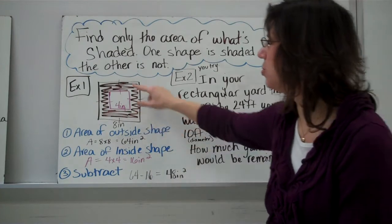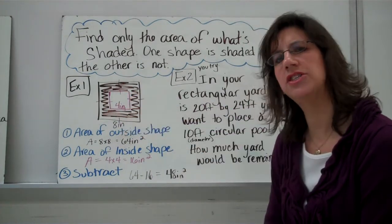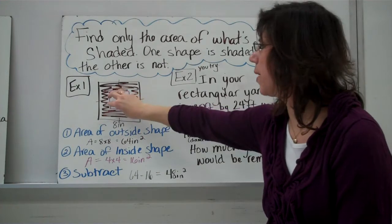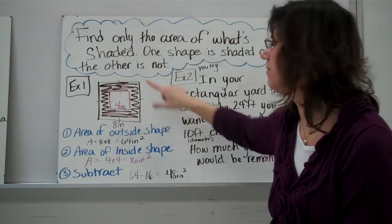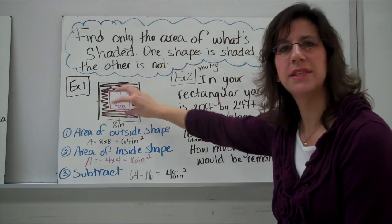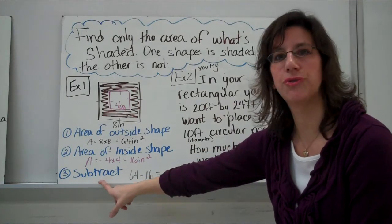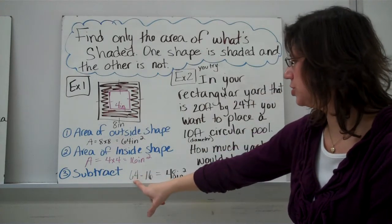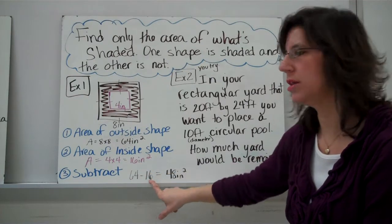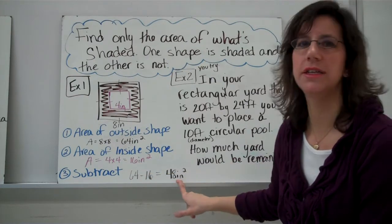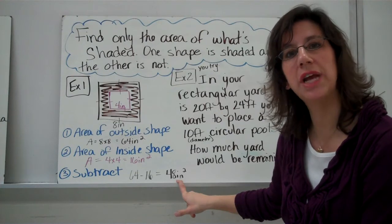Now, because you only want the part that's shaded, kind of imagine this like a donut. This square is being cut out of the larger square. It's cutting out, taking it out. So, you're going to subtract. Take the area of the large, subtract the area of the small, and that's going to be the area of what's left, or the shaded part.